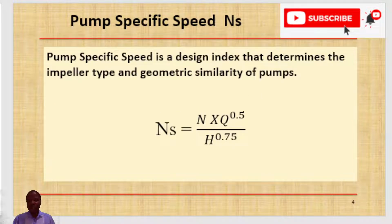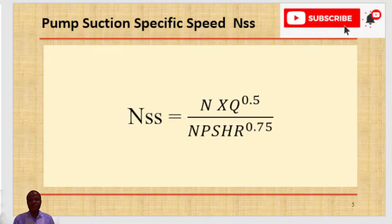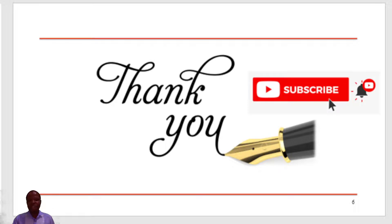Pump specific speed is a design index that tells you the impeller type and geometric similarity of pumps. Pump function specific speed tells you how aggressive the inlet condition is for a given application.